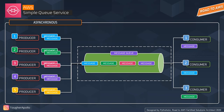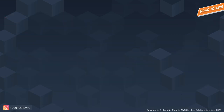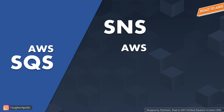You might ask: what if multiple consumers want to process a single message? That's a valid question — the message queue can be combined with pub/sub messaging. Pub/sub, also called publisher-subscriber messaging in a fan-out design pattern, achieves this. We'll discuss this when we talk about AWS Simple Notification Service. Think of it like a WhatsApp broadcast group — you send a message and all members receive it.